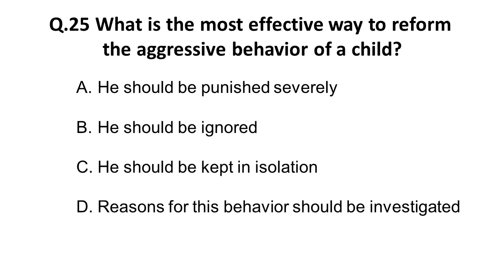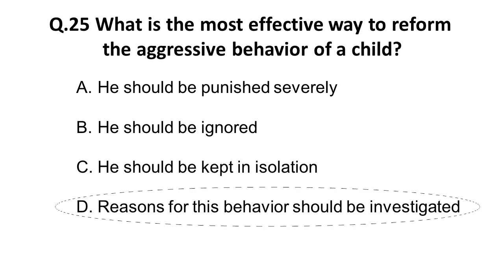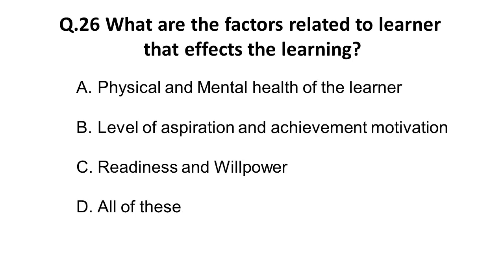The twenty-fifth question: what is the most effective way to reform the aggressive behavior of a child? Options: A) he should be punished severely — as I said in teaching aptitude, as a teacher you cannot be harsh; B) he should be ignored — this also cannot be done, as a teacher should reform the student; C) he should be kept in isolation — this will not solve the problem. So the correct answer is D) the reason for the behavior should be investigated.